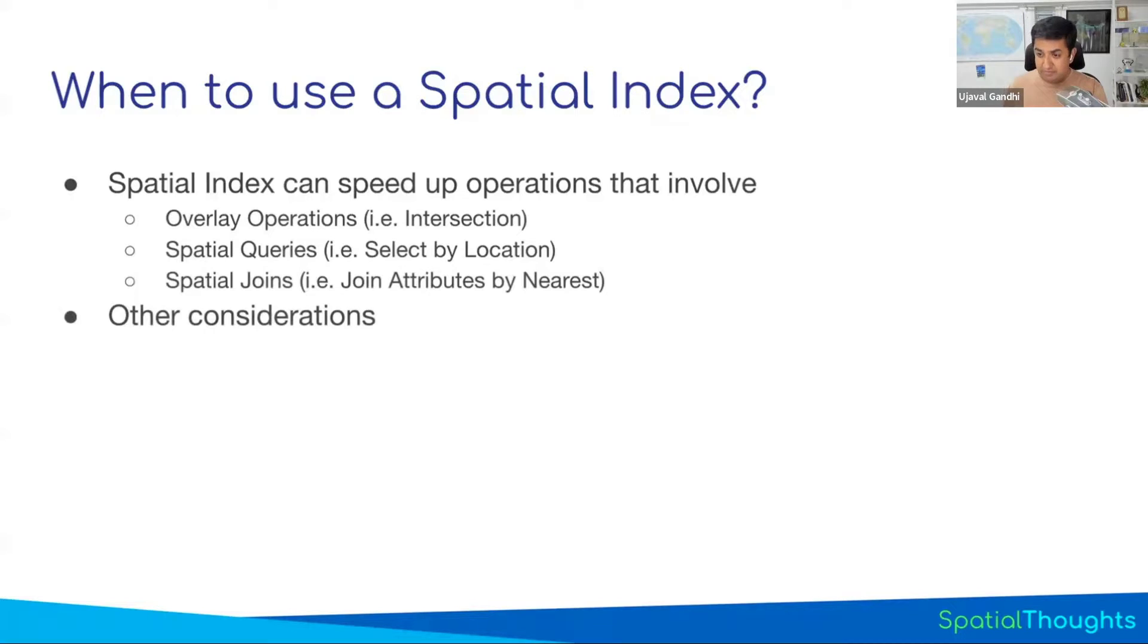So if you're just doing some operation which is like buffer, it doesn't matter if you have a spatial index or not because it doesn't really, it has to go and buffer each polygon. So it doesn't impact all the operations. Any operation involving two layers and any spatial queries or spatial joins will be sped up.